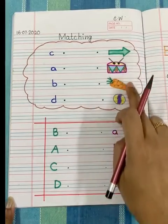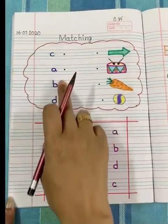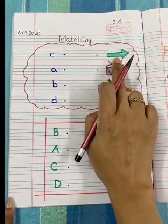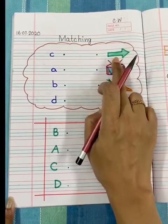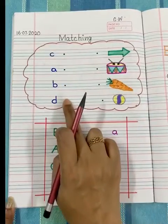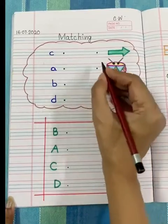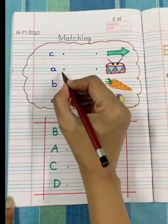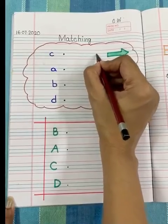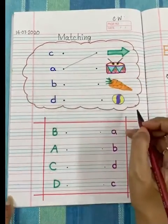Here, as you can see, there are few pictures. And here are some letters. Now, you have to find the A sound letter and match. Arrow — which letter has A sound? This letter. So, I will match arrow with the A letter.